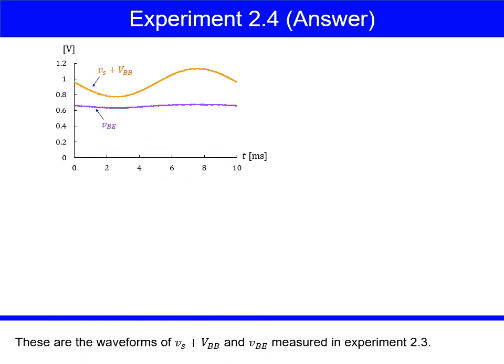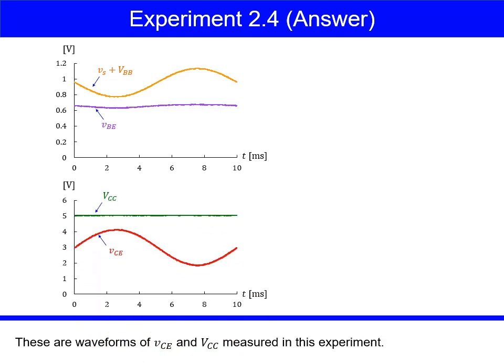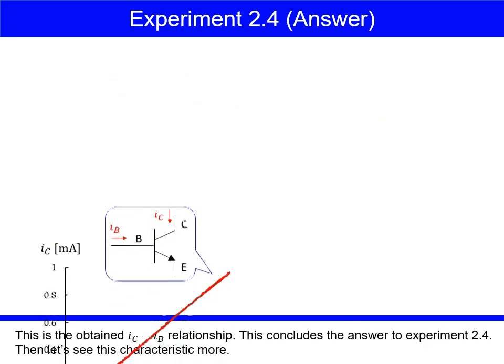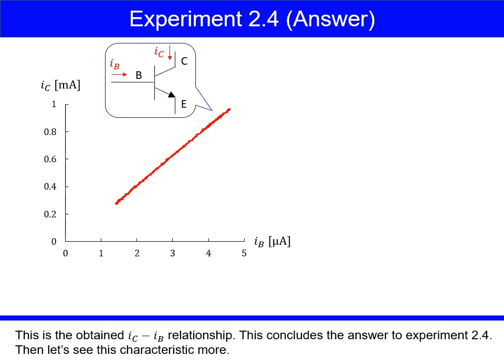These are the waveforms of Vs plus Vbb and Vbe measured in Experiment 2.3. These are waveforms of Vce and Vcc measured in this experiment. From these data, Ib and Ic were calculated. This is the obtained Ic-Ib relationship. This concludes the answer to Experiment 2.4. Then let's see this characteristic more.